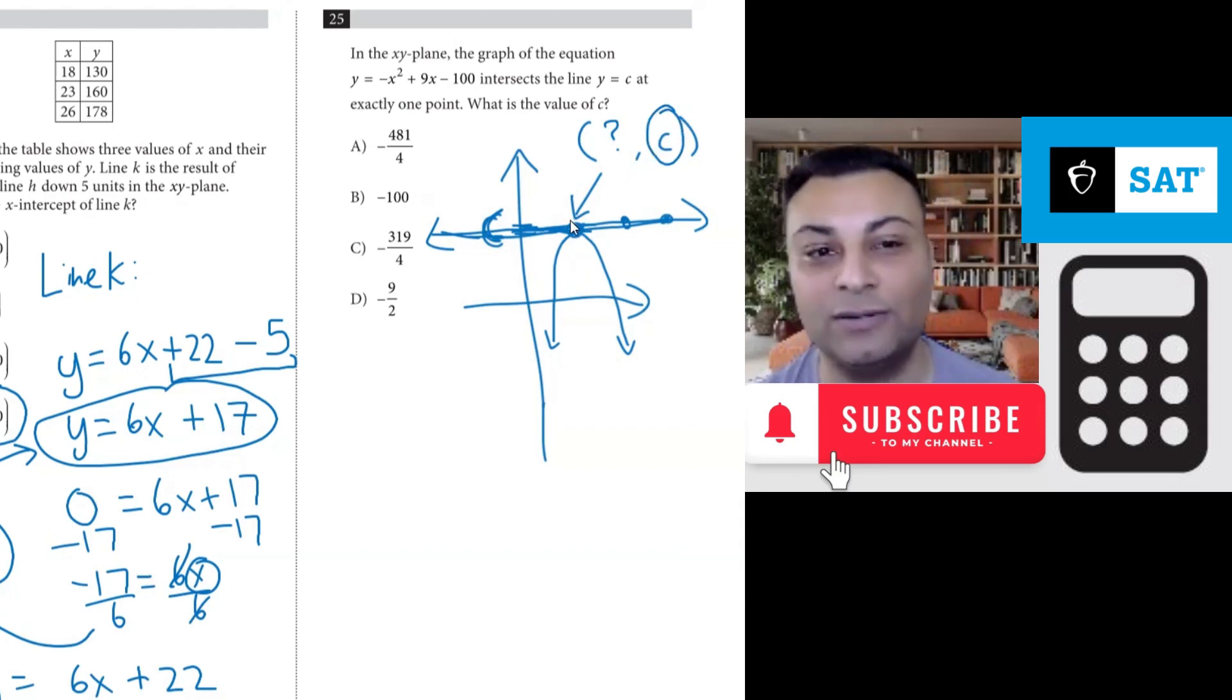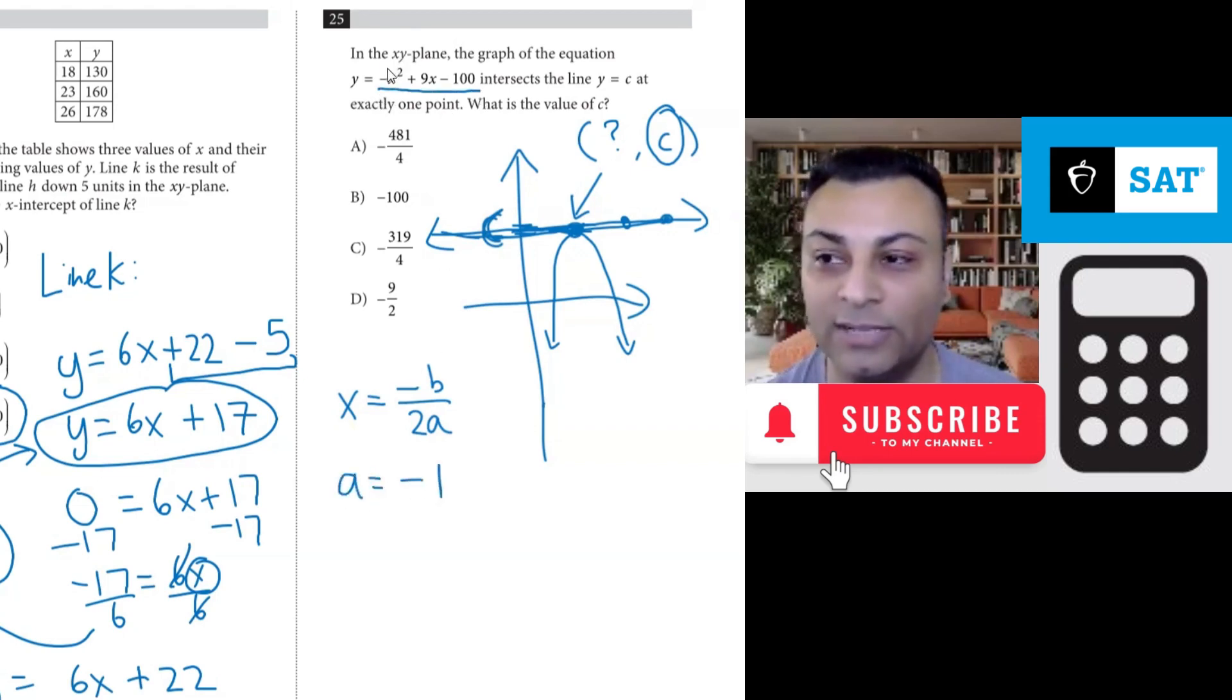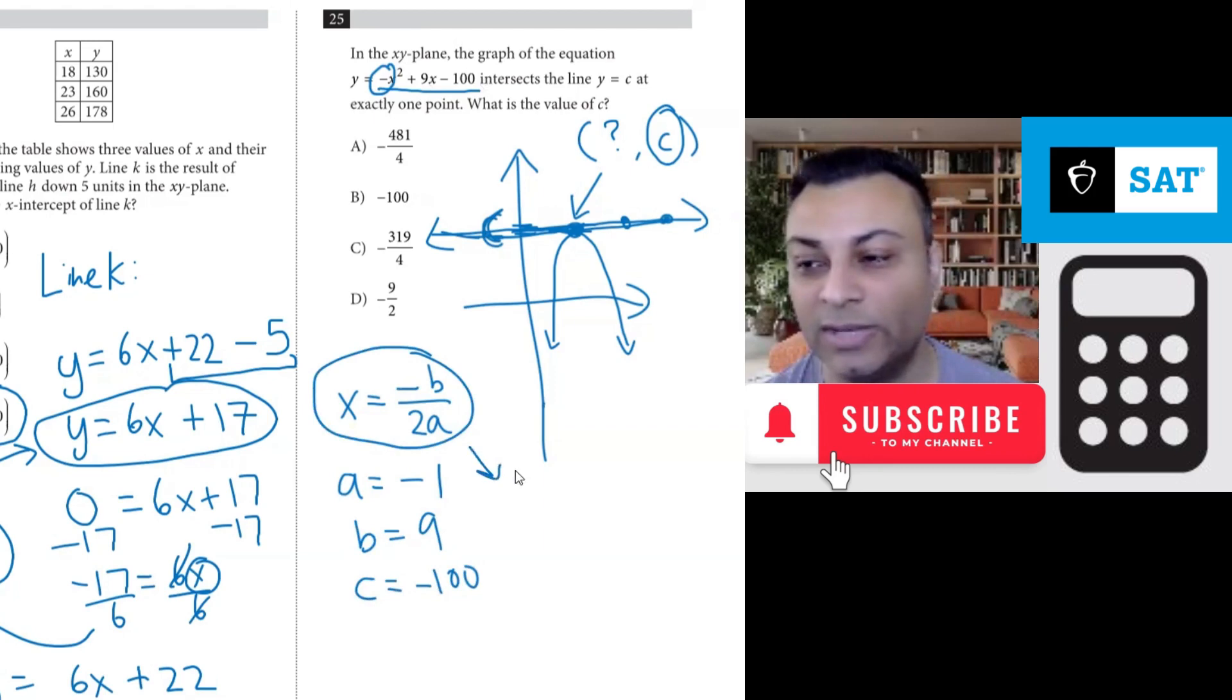So let's go find the vertex of this particular parabola. If you recall the way you find the vertex is x equals negative b over 2a and that's the x coordinate of the vertex. And in this particular case if you look at this equation the a is negative 1 right there next to the x squared. The b is 9. The b is positive 9 and the c is negative 100. We don't use that in this formula. We just need the a and the b. So let's go ahead and do that.